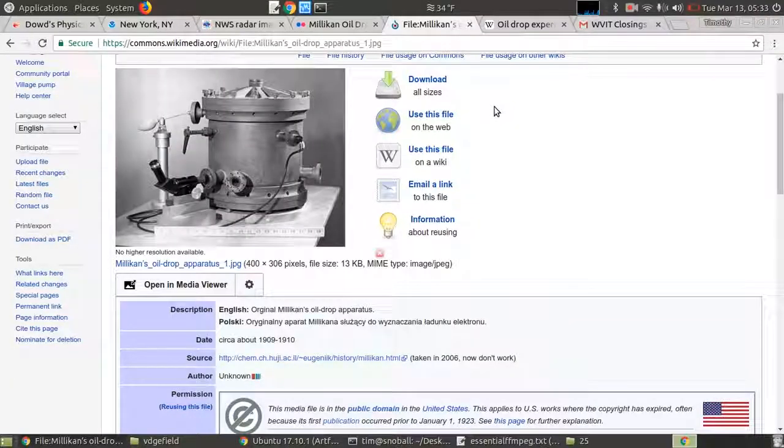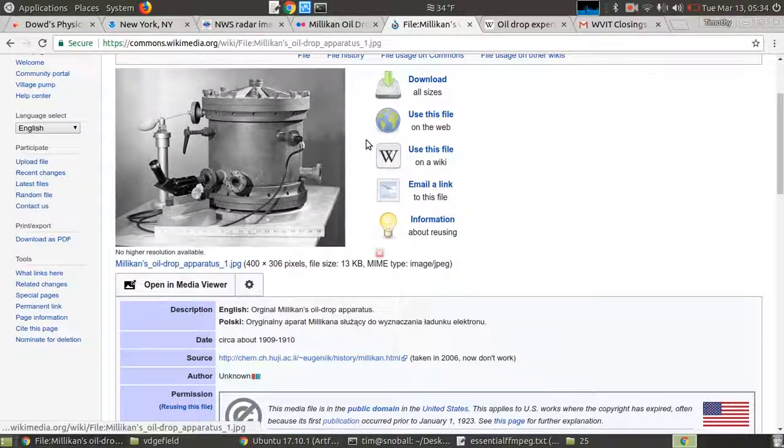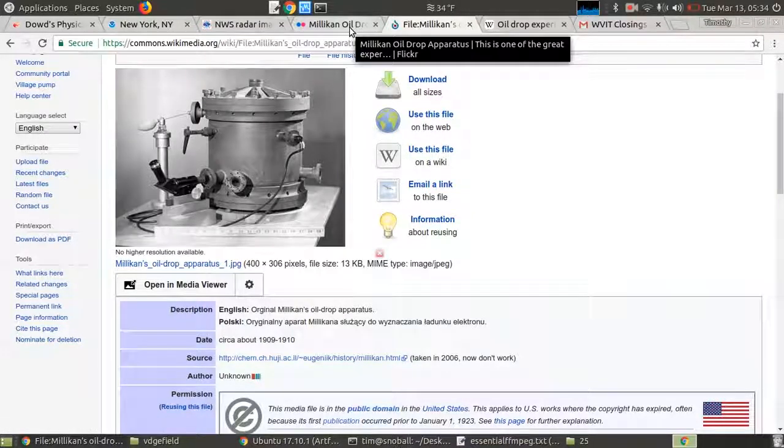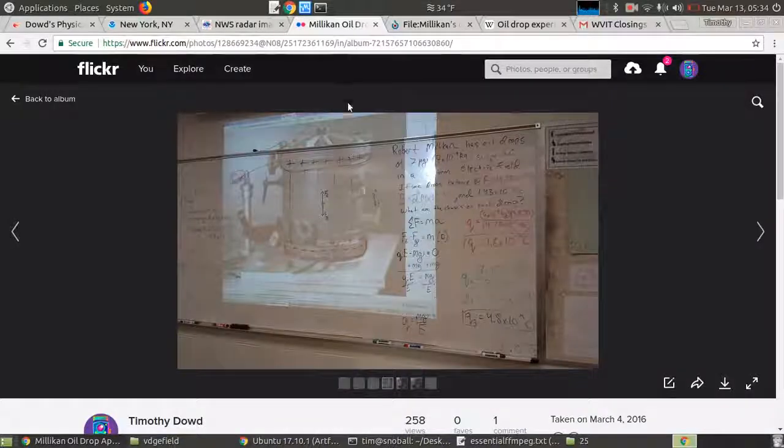Coulomb's Law and the idea of the electric field were most famously used in 1909 by Robert Millikan and Harvey Fletcher to discover what the charge is on an electron. It's a famous experiment called the oil drop experiment. And this is a picture of the device they used. It enabled them to put an electric field inside it and therefore put forces on drops of oil that had charge on them.